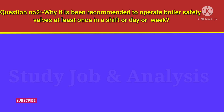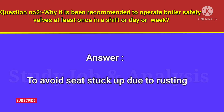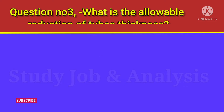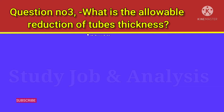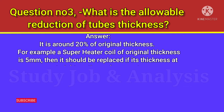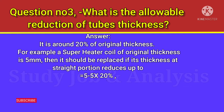Answer: To avoid the seat getting stuck up due to rusting. Question number three: what is the allowable reduction of tube thickness? Answer: It is around 20 percent of the original thickness.